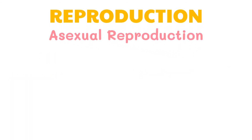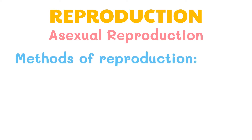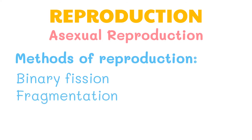Asexual reproduction has different methods, namely binary fission, fragmentation, and budding. Let's discuss each of these methods separately.